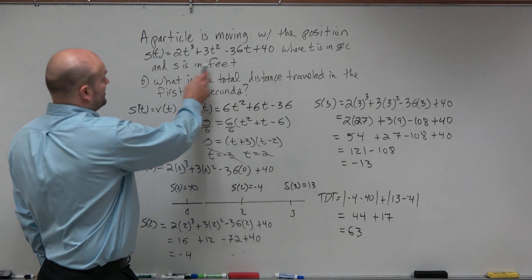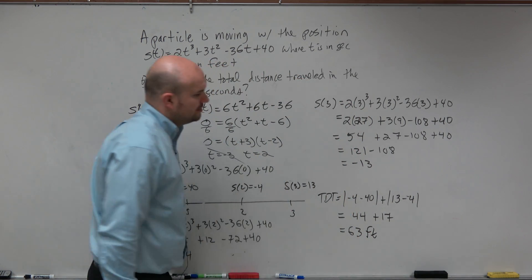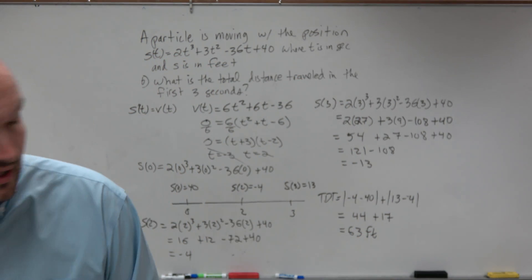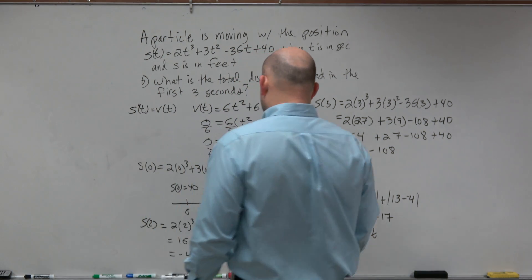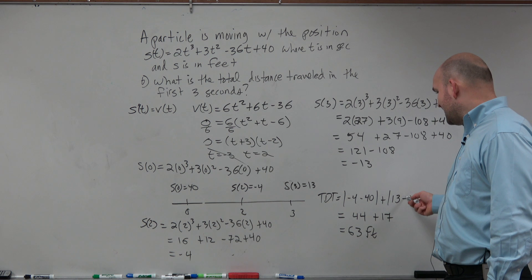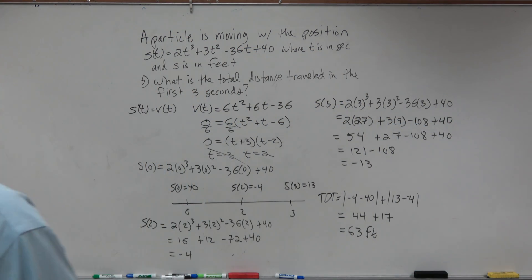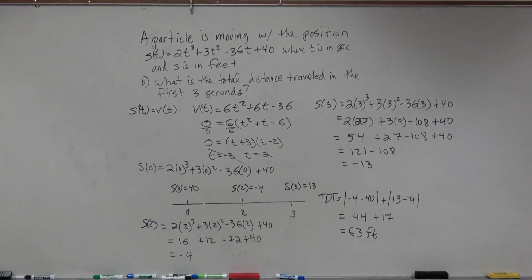44 plus 17 is going to be 61. And then again, we're traveling in feet. So we can go 63 feet. How did I get 17? It's 13 minus a negative 4. So it's really positive. I forgot to add a 4. Anybody have any questions?